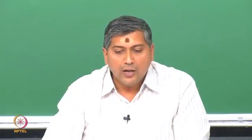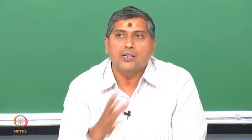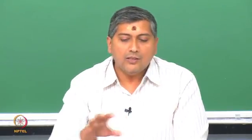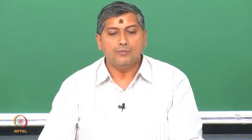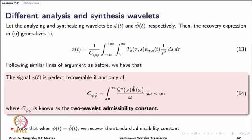We know that φ(t) acts as a low-pass filter because φ̂(ω) at ω=0 is nonzero. Therefore φ(ω) is the frequency response of a low-pass filter, and x̂(t) — the inverse Fourier transform of x̂(ω) — is an approximation or low-pass filtered version of x(t). So the synthesis equation illuminates both the role of admissibility and the scaling function.